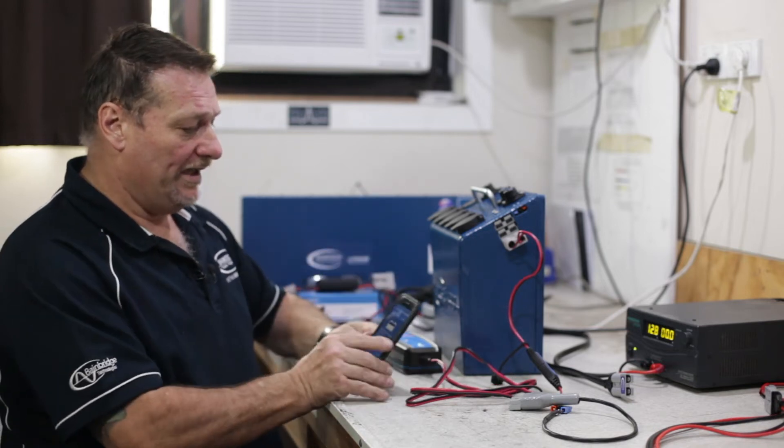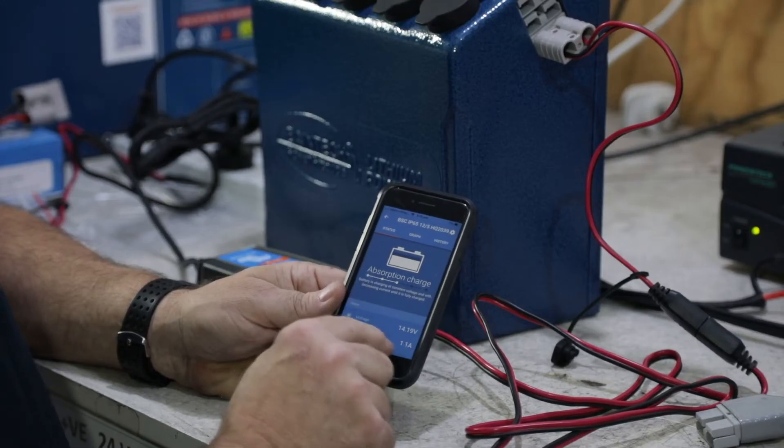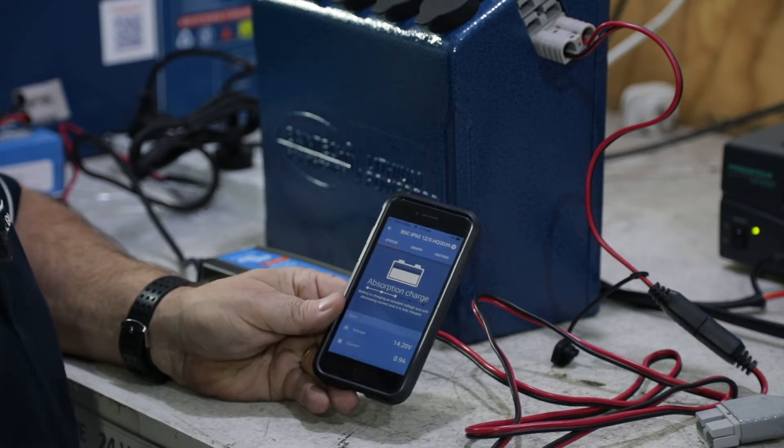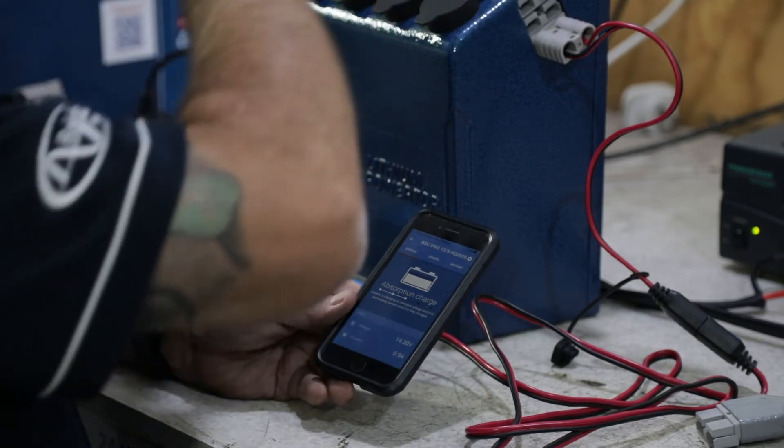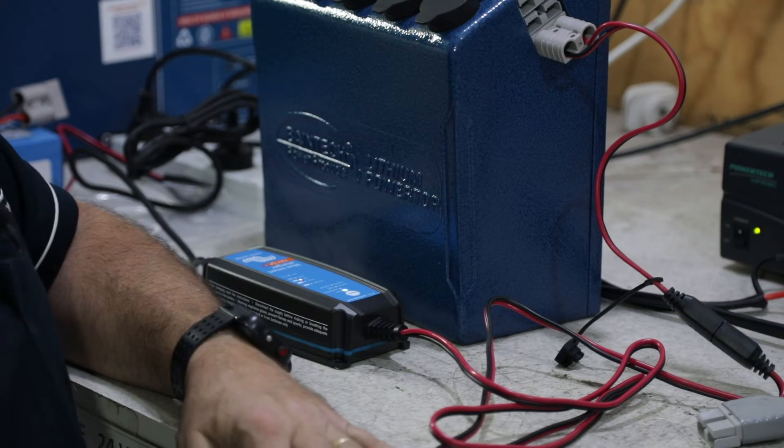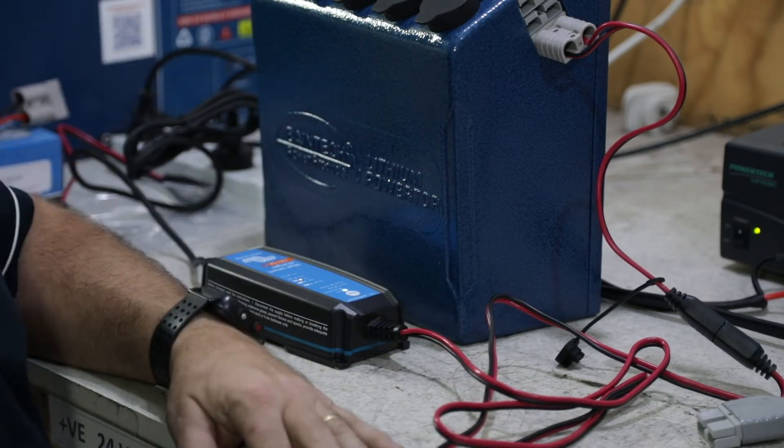Under advanced settings it will give you battery settings where you can change your absorption voltage, change your battery preset. Obviously because we put it into lithium-ion charger it knows that it's a lithium-ion battery so all those settings are correct.